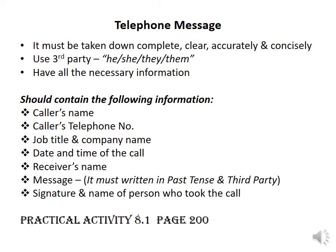You must make sure that all necessary information the caller has given you is written down. The telephone message must contain the following information: the caller's name, the organization called, the caller's telephone number, job title and company name if the caller is from another company, date and time of the call, the receiver's name — who the call was intended for — a short message written in past tense and third party, and your name and signature at the end.